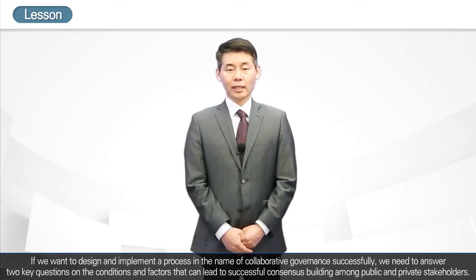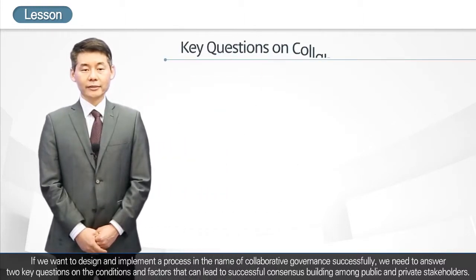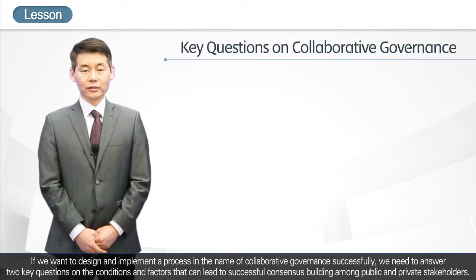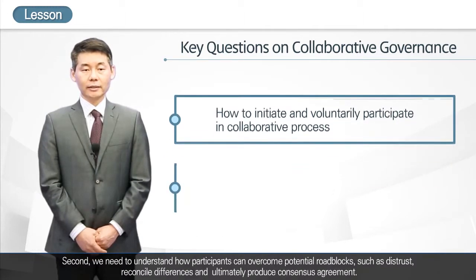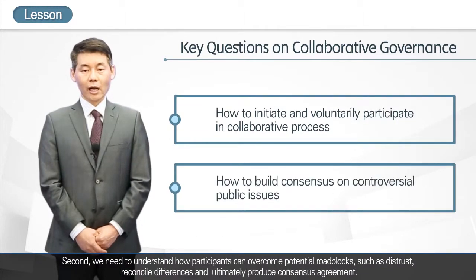To design and implement a collaborative governance process successfully, we need to answer two key questions. First, how can public agencies initiate or convene a collaborative process and have private stakeholders participate voluntarily? Second, how can participants overcome potential roadblocks such as distrust, reconcile differences, and ultimately produce a consensus agreement?